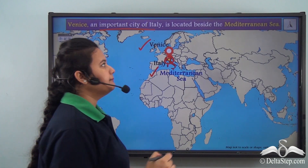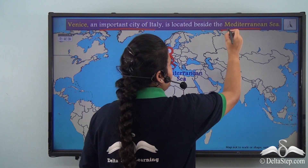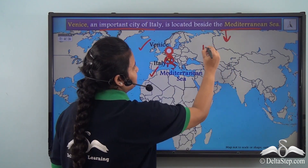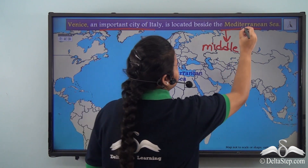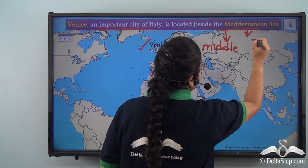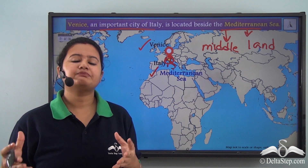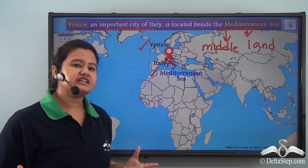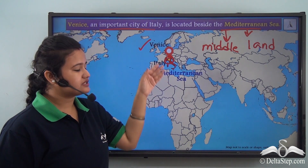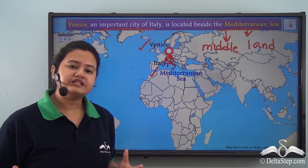Now the word Mediterranean can be divided into two parts, where 'Medi' means middle and 'Terran' means land. So Mediterranean Sea simply implies a sea that is between land masses. As we can see here, this water body is indeed surrounded by land masses from all sides, and hence it is named as Mediterranean Sea.